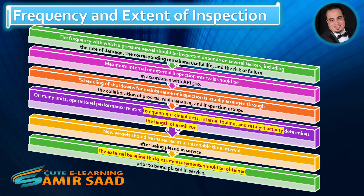Scheduling of shutdowns for maintenance or inspection is usually arranged through the collaboration of process, maintenance, and inspection groups on many units. Operational performance related to equipment cleanliness, internal fouling, and catalyst activity determines the length of a unit run. New vessels should be inspected at a reasonable time interval after being placed in service, and external baseline thickness measurements should be obtained prior to being placed in service.